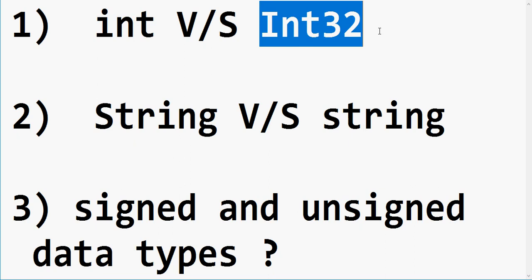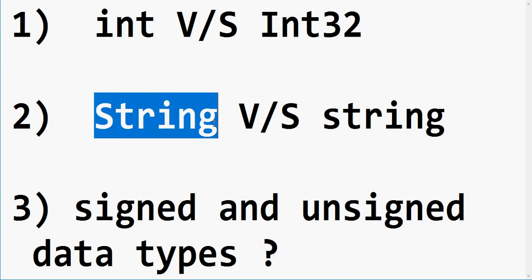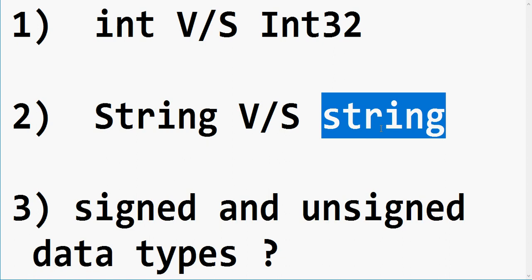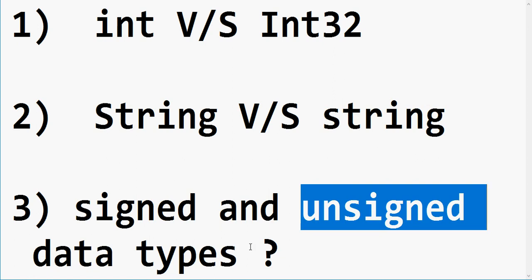In today's video we'll cover integer versus Int32 and other data types like Int16 and Int64. Apart from this, we will also discuss String versus string — the capital S versus lowercase s difference you see while coding. We'll also see what signed and unsigned data types are. Let's flip to Visual Studio and do it practically to see which class they belong to.